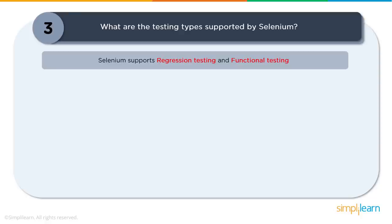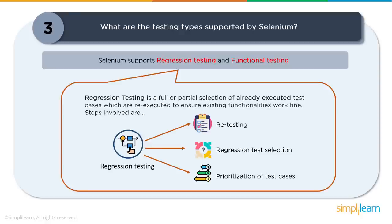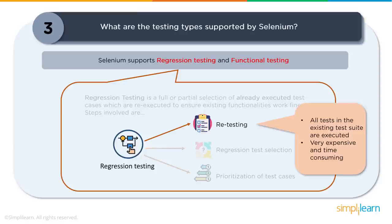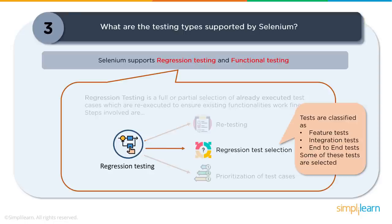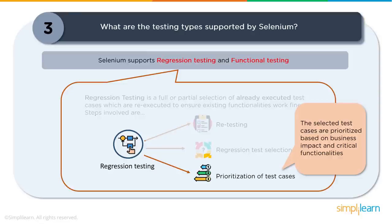Question three: What are the testing types supported by Selenium? Selenium supports regression testing and functional testing as two high-level categories. Regression testing is a full or partial selection of already executed test cases which are re-executed to ensure existing functionality does not break. Regression tests are run every time a new fix has been received or a new feature has been deployed. You can select a full suite or specific tests based on recently added features, defect areas, integration points, or end-to-end tests.